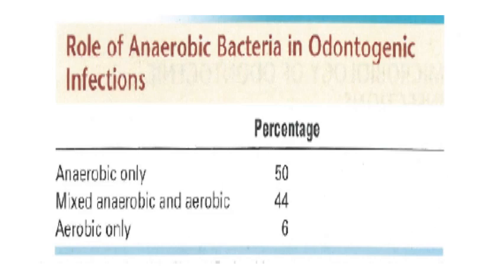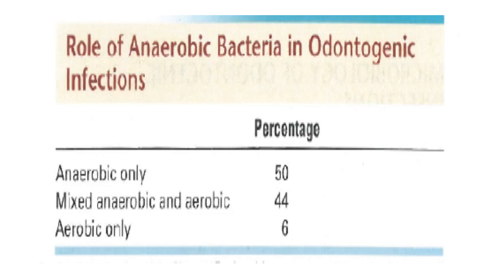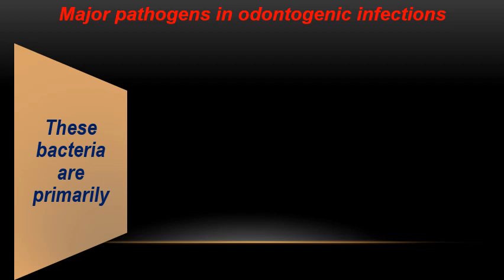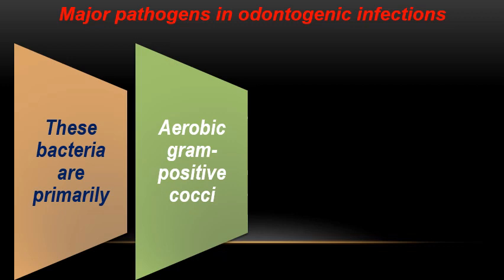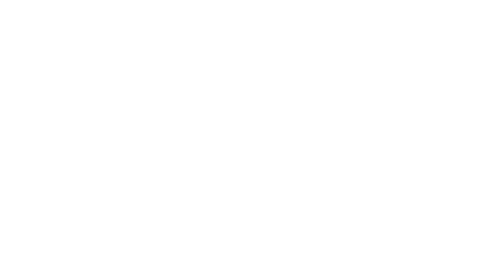Regarding the role of anaerobic versus aerobic bacteria in odontogenic infections: anaerobic bacteria alone comprise around 50% of cases; mixed anaerobic-aerobic bacteria are present in 44% of cases; and aerobic bacteria only in 6% of cases. The bacteria involved include aerobic gram-positive cocci, anaerobic gram-positive cocci, and anaerobic gram-negative rods.